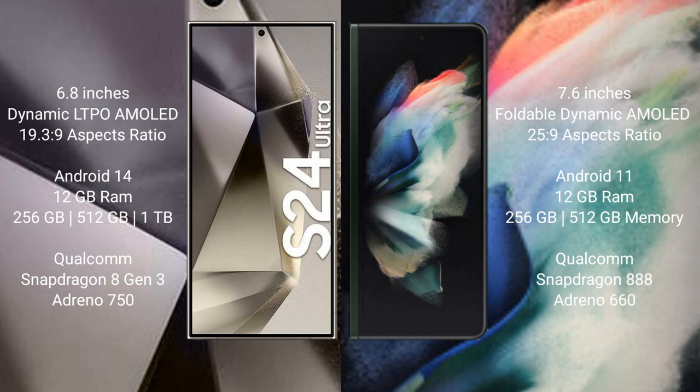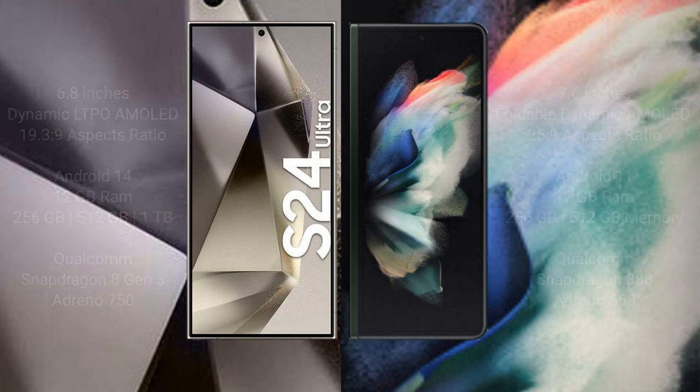The Samsung Galaxy S24 Ultra comes with 12GB RAM and 256GB, 512GB, or 1TB internal storage options, powered by a Qualcomm Snapdragon 8 Gen 3 processor with Adreno 750 GPU. The Samsung Galaxy Z Fold 3 comes with 12GB RAM and 256GB or 512GB internal storage, powered by a Qualcomm Snapdragon 888 processor with Adreno 660 GPU.